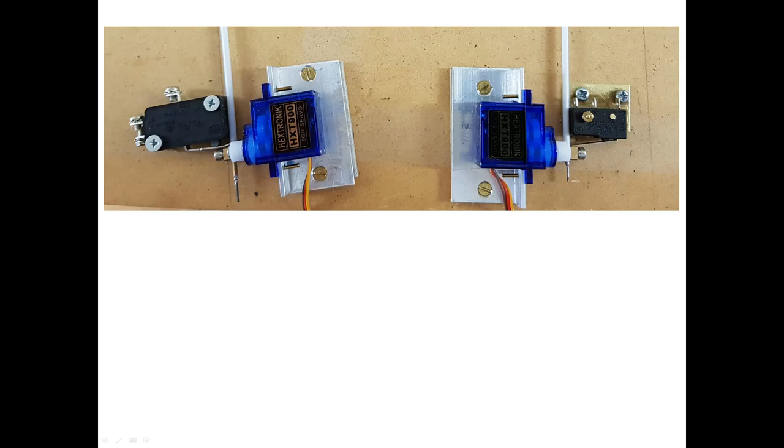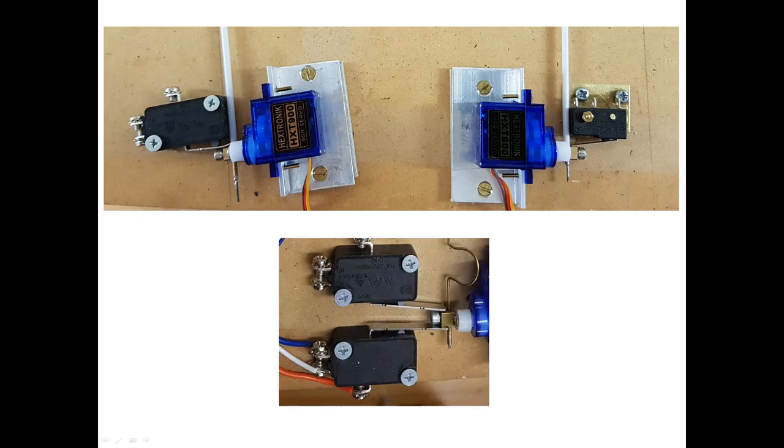I use the pushrod connector to operate a microswitch to change the frog polarity. This can be problematic because the throw is so small. You can see here two solutions that I've adopted. The operating arm of the microswitch on the left has been significantly reduced in length and on the right you can see that I've used a much smaller microswitch, which of course came from China. It's possible to operate two microswitches simultaneously as you can see here, where the second switch, not yet wired up, is to illuminate a light-emitting diode to indicate the position of the turnout on the yet-to-be-built control panel.